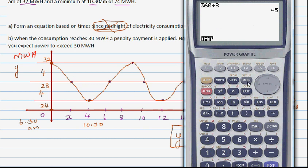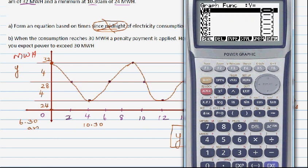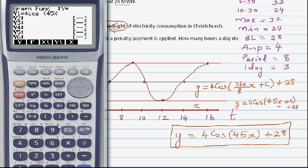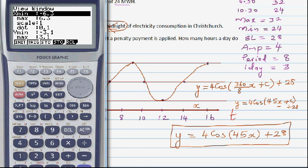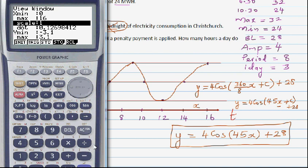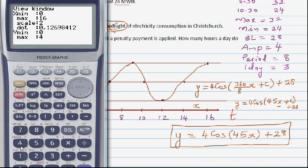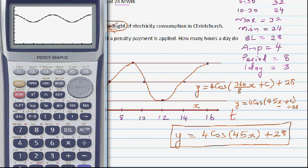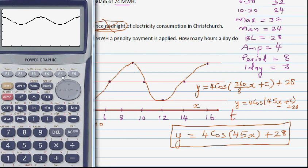Let's verify this on the graphing calculator. Entering 4cos(45x) + 28, with the x-axis from 0 to 16 at a step of 2, and the y-axis from 0 to 40 at a step of 4. The graph shows the cosine curve, and checking the maximum confirms it occurs at x = 8, verifying the equation is correct.